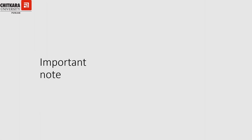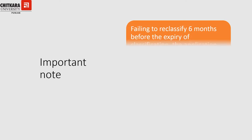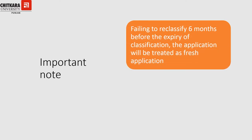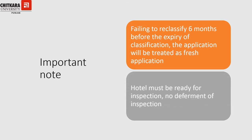Two most important points to note: first, if a hotel fails to apply for reclassification six months prior to its existing classification expiry, the HRACC will treat the application as a fresh application, not a reclassification application. Second, when a hotel has applied for classification, it must be ready for inspection at any time — no deferment of inspection will be accepted or entertained by the HRACC.